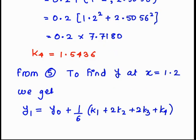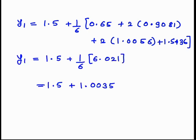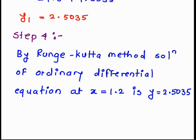Now we have all values: k₁ = 0.65, k₂ = 0.9081, k₃ = 1.0056, k₄ = 1.5436. The final formula is y₁ = y₀ + (1/6)(k₁ + 2k₂ + 2k₃ + k₄). Substituting y₀ = 1.5 and all k values, we get y₁ = 1.5 + 1.0035. For the numerical solution, take care to solve each step carefully to get a perfect answer. So y₁ = 2.5035, which is the value of y at x = 1.2.